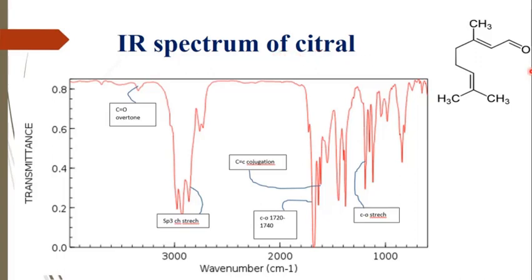IR spectrum of citral in which I have a system of aldehyde group right here and then alkene groups with respect to the methyl groups.